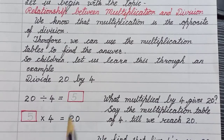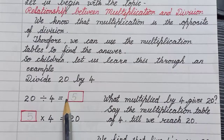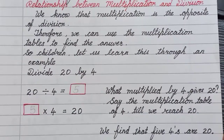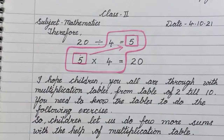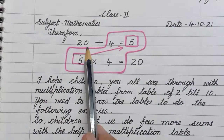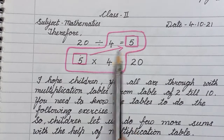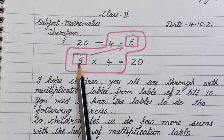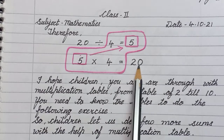So we find that 5 fours are 20. We will write here: 5 fours are 20. So 20 divided by 4 is equal to 5.